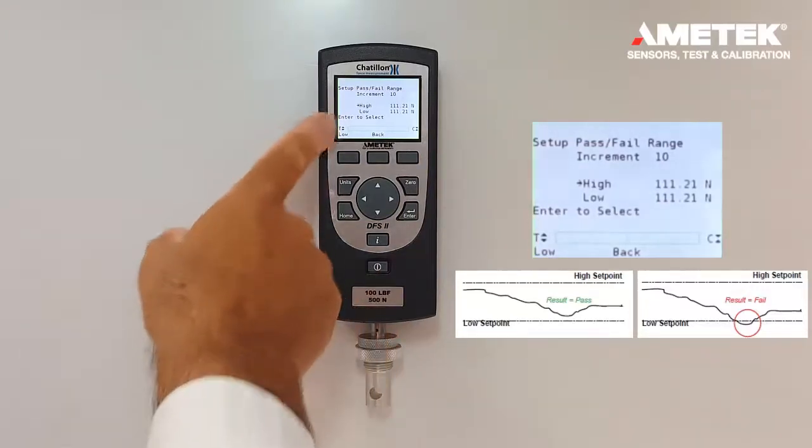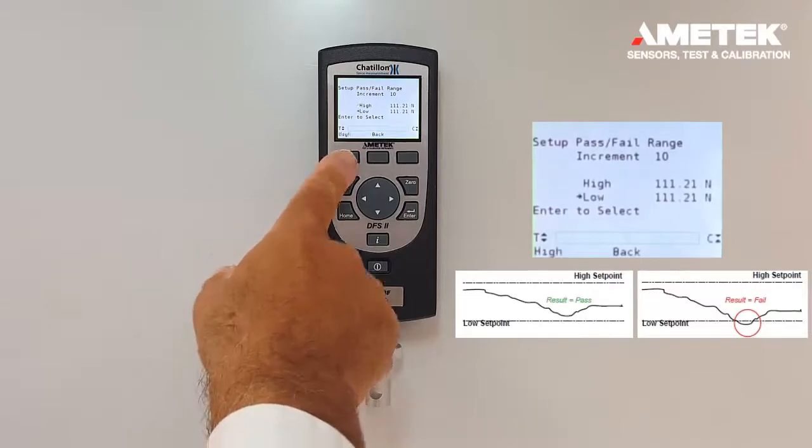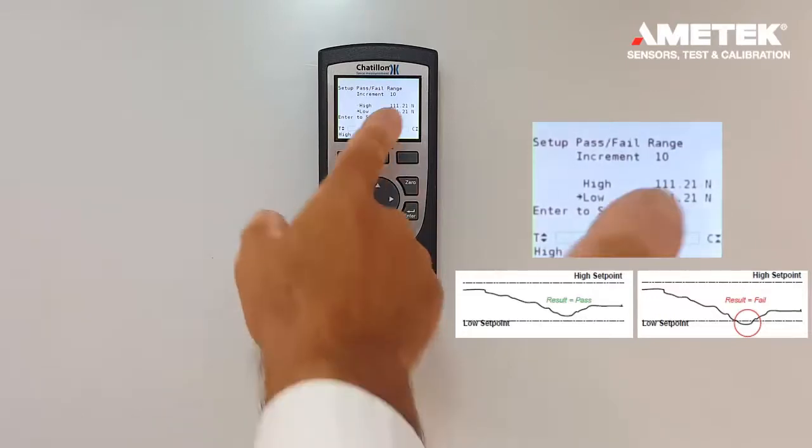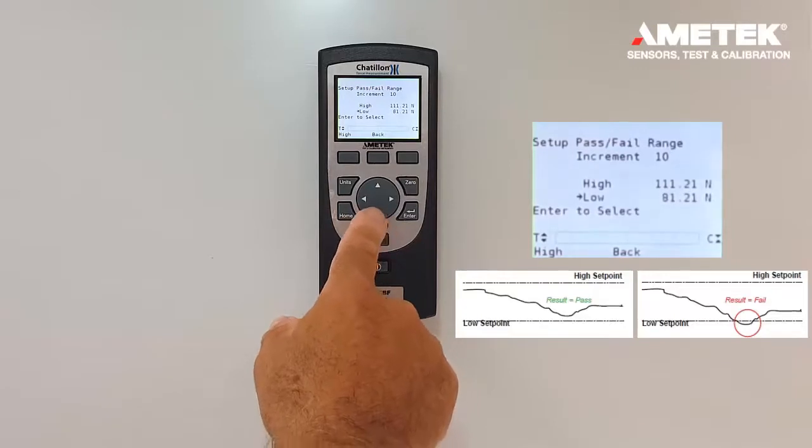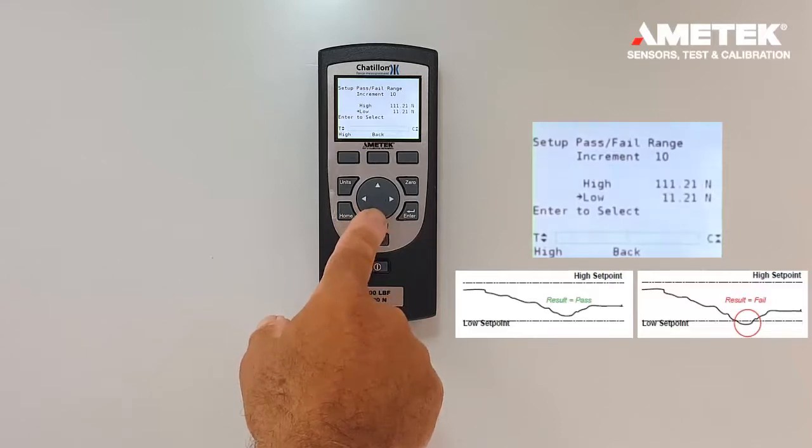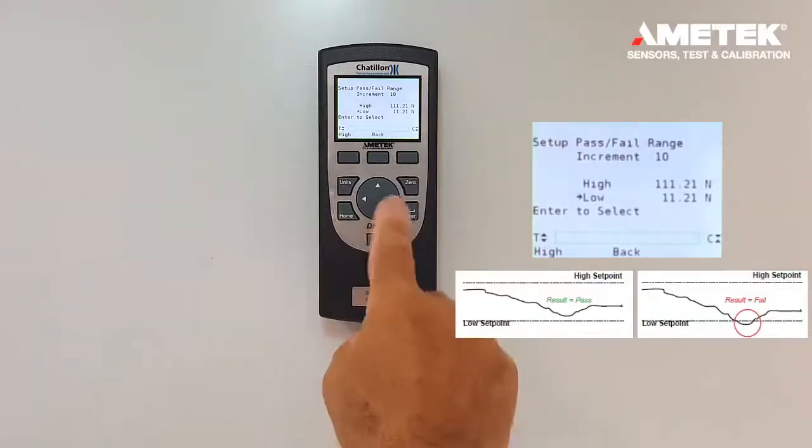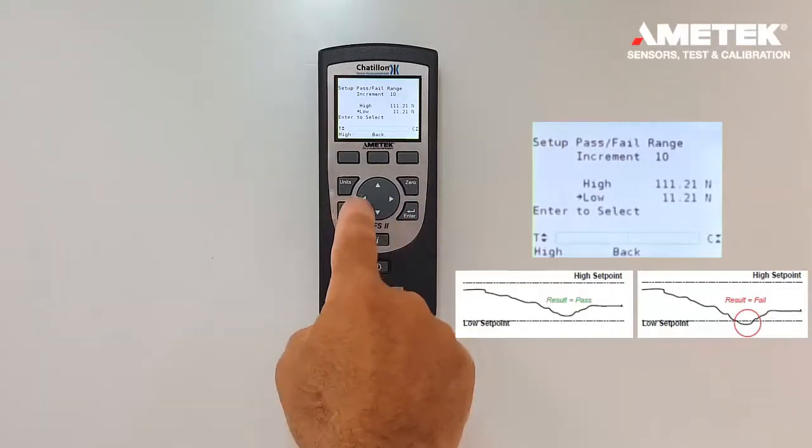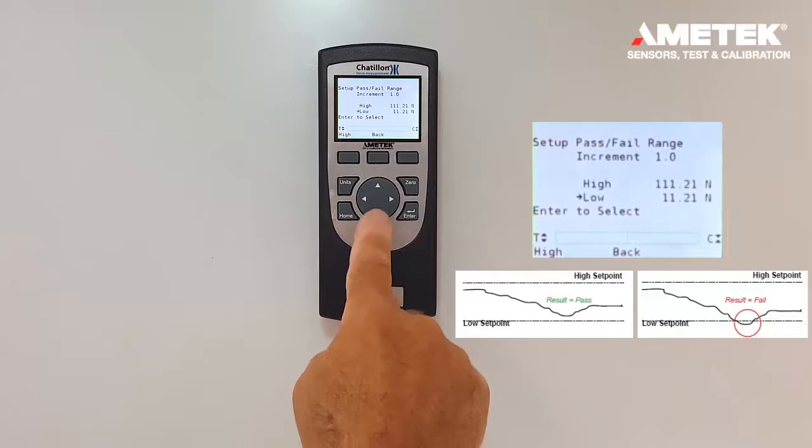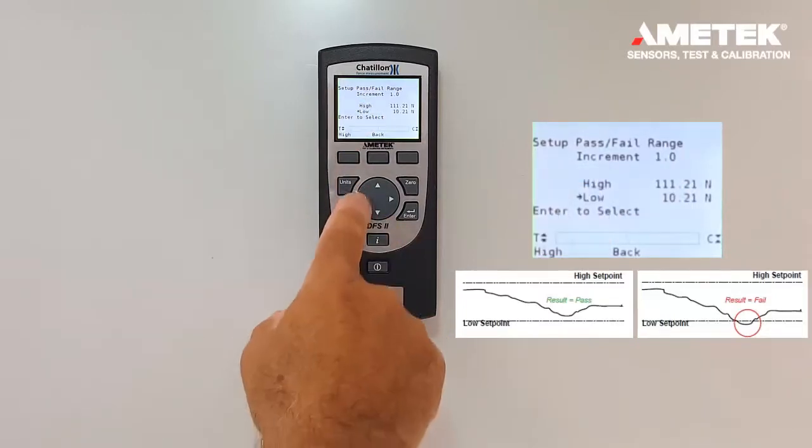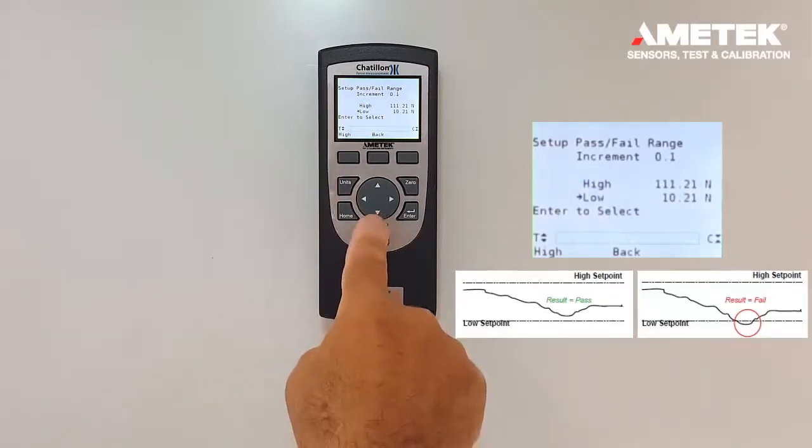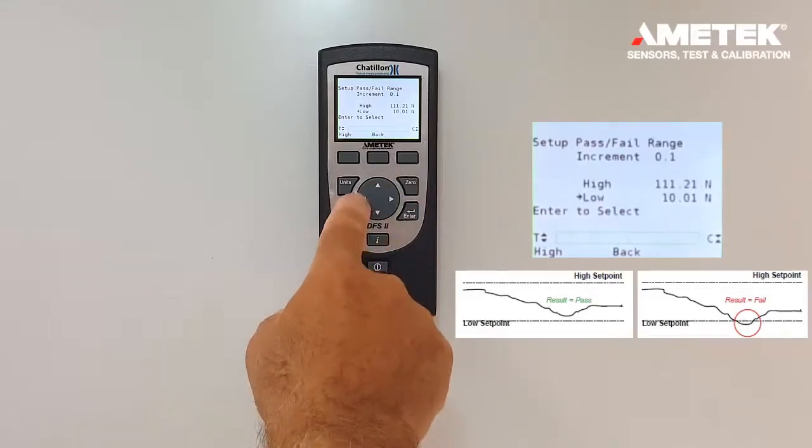Now you'll notice that we cannot go any lower with the high because the low is already at 111.21 newtons. So it's always better to start with the low. So press the F1 button to change to low and now you can go down to a lower value. So we said we are going to set the lower limit at 10 newtons. So here we are at 11.21. If we want to change the increment, once again we press the right or left arrow button to reduce the increment.